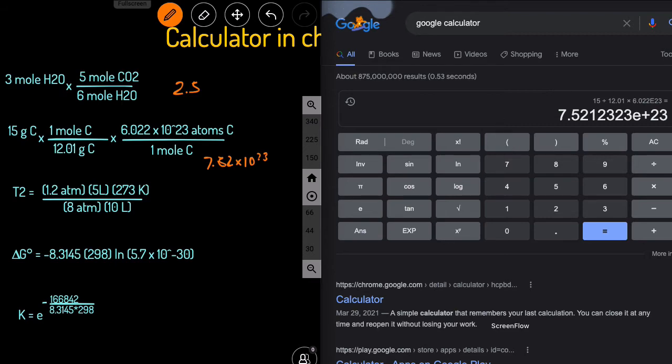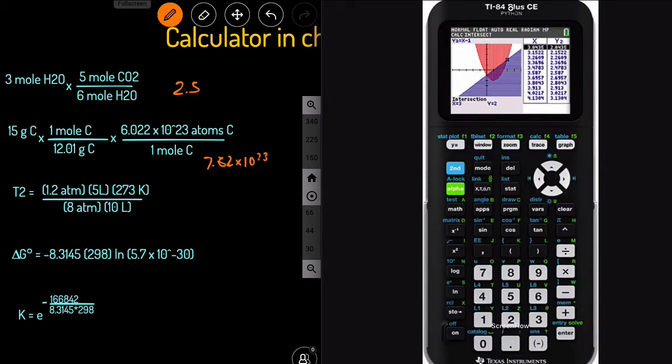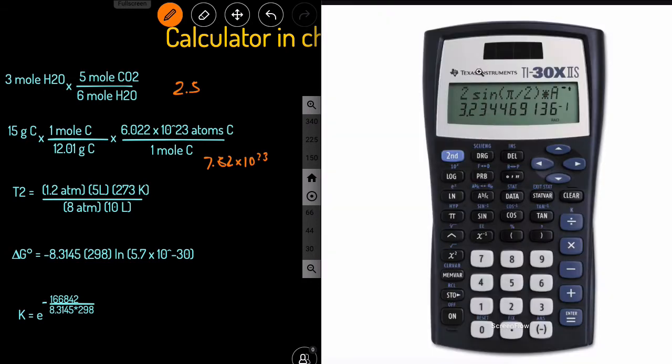So how do we enter the E on the TI-84 plus CE? Well, you first have to click second, and then click the comma, and that'll give you the EE. But when you enter, you'll just see one E. And how do you get the EE or the E on the other calculator? You just click second, and click the X to negative one, and that'll bring up the E or the EE.